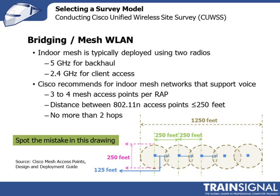Every time your traffic has to do a hop from a mesh access point to another mesh access point, it is incurring latency. If you're supporting voice for your clients on the 2.4 GHz band, then you also need to support voice on your backhaul on the 5 GHz band. In this situation, Cisco recommends keeping the distance between access points smaller so you'll be at higher data rates, and also recommends no more than two hops. If you do both of those things, it should be good enough to support a voice call across the backhaul.